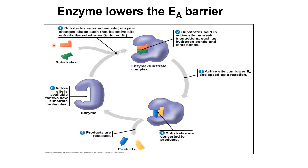This diagram shows the chemical reaction that happens between substrates and enzymes. Substrates will bind to the active site of the enzyme. The shape of the active site of the enzyme is slightly different from the shape of the substrates. When substrates bind to the active site, the active site will change its shape slightly so that the substrate can fit into the active site of the enzyme.